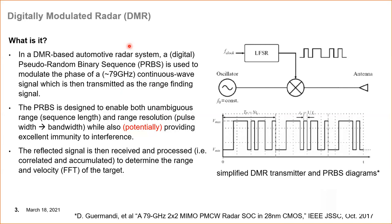Digitally modulated radar — this particular example is actually phase-modulated continuous wave. The reference shown at the bottom of this slide is from researchers at IMEC in Belgium. In a DMR-based radar system, a digital pseudorandom binary sequence is used to modulate the phase of a typically 79 gigahertz continuous wave sine wave, which is then transmitted as a range-finding signal.